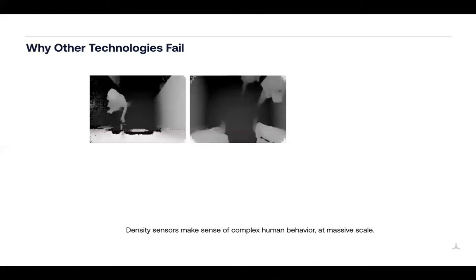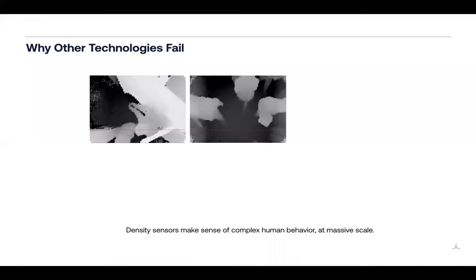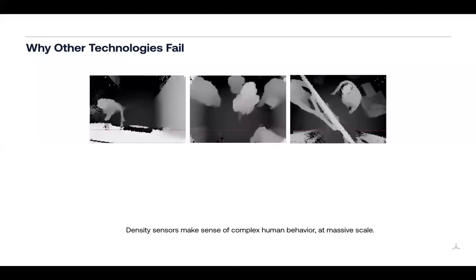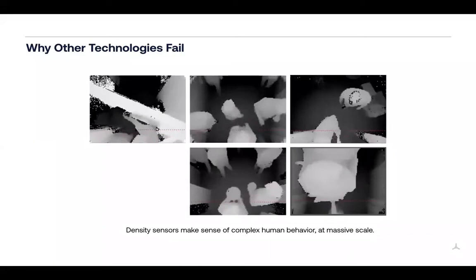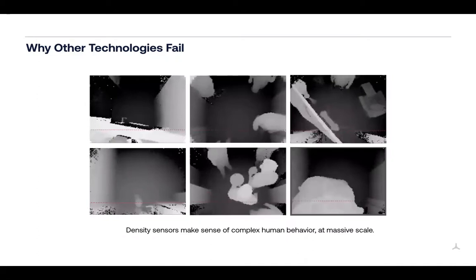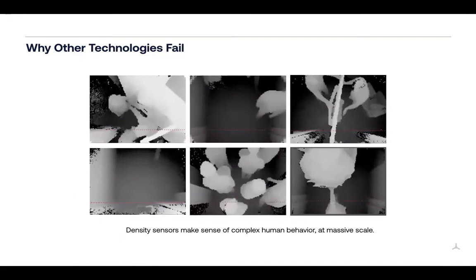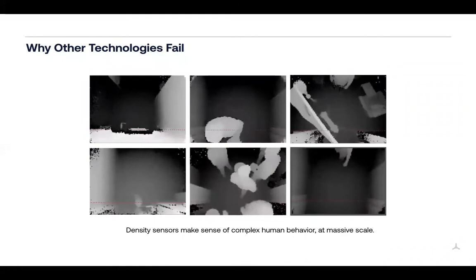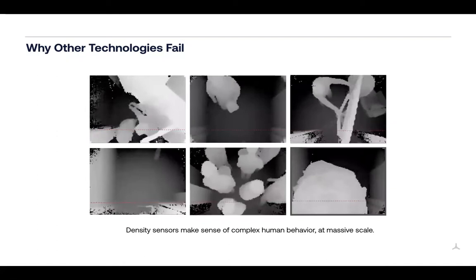There's a large variance in human behavior, and if you want to do accurate, real-time, and anonymous counting of individuals, things like cameras, break-beam sensors, stereoscopic vision, WiFi or MAC address tracking — there's a whole set of other technologies that attempt to do this, but they fail in one or more of those three categories: accurate, anonymous, or real-time.